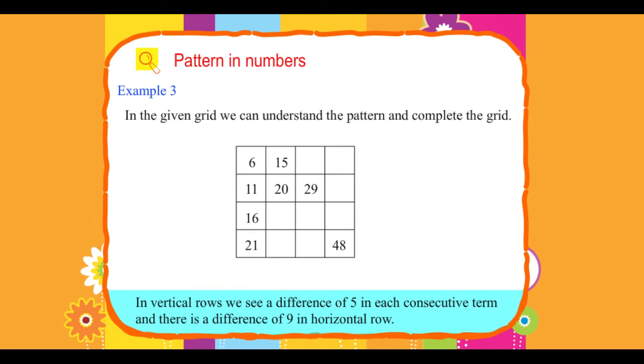Example 3. In the given grid, we can understand the pattern and complete the grid. In vertical rows, we see a difference of 5 in each consecutive term and there is a difference of 9 in horizontal row. Therefore, we can complete the grid as shown.